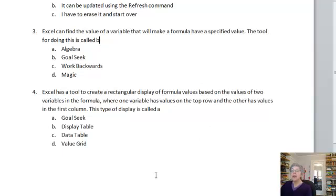Excel has a tool to create a rectangular display of formula values based on the values of two variables in the formula, where one variable has values in the top row and the other has values in the first column. This type of display is called what? And the answer here is it's called a data table, c.